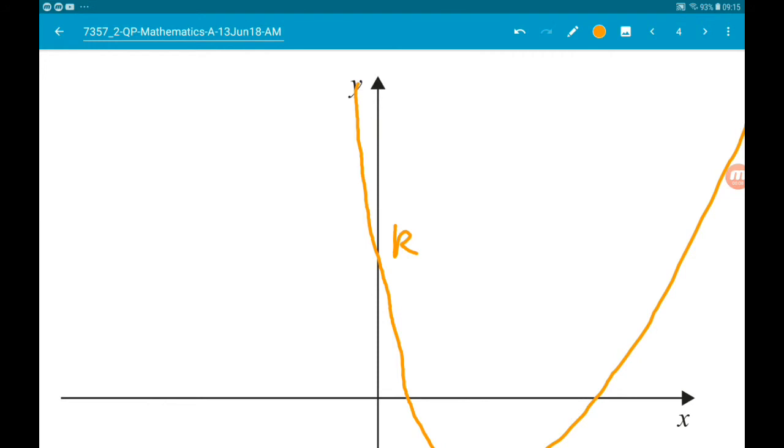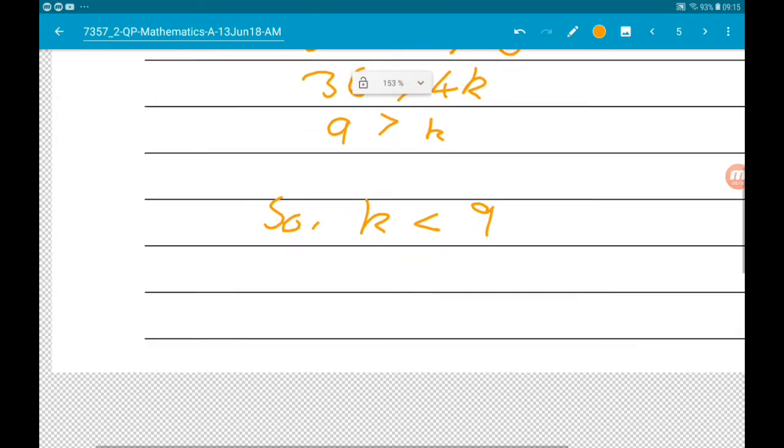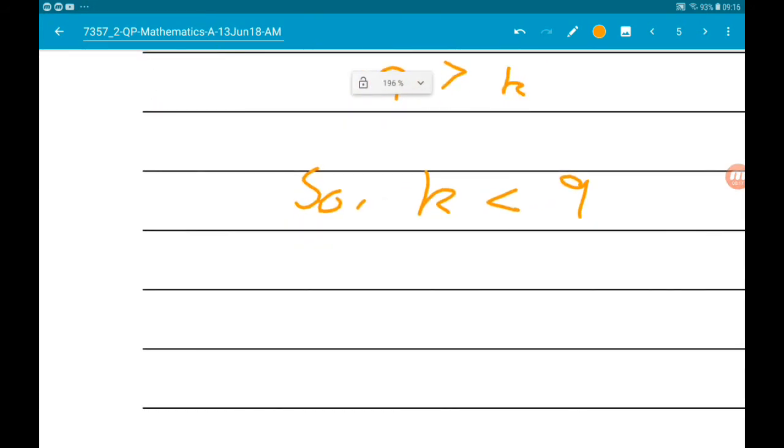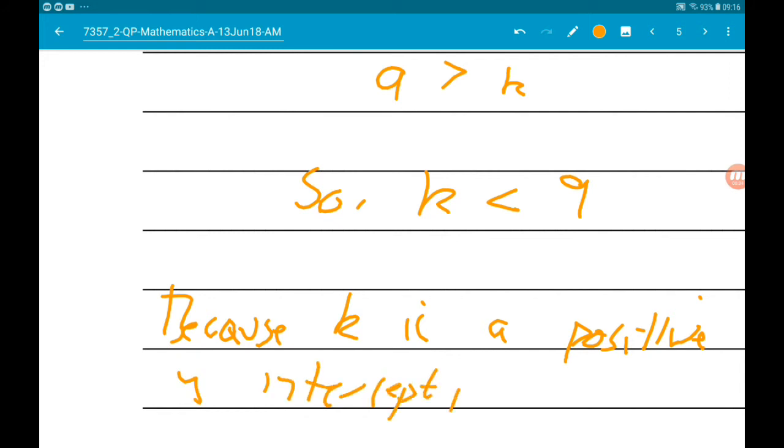Now, it has to be positive and greater than 0. So we should now say that because k is a positive y-intercept, k also has to be greater than 0.